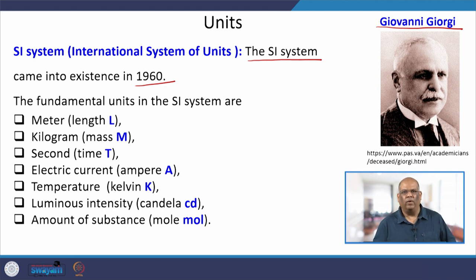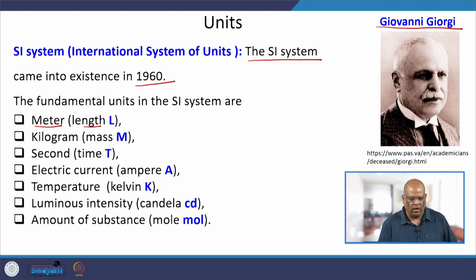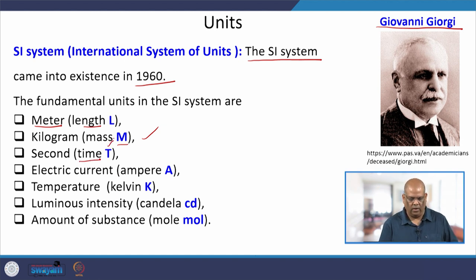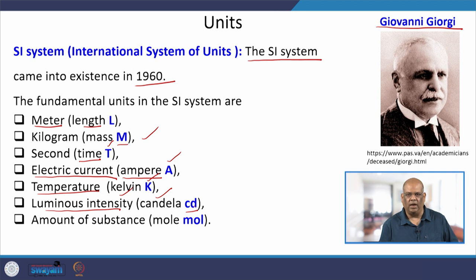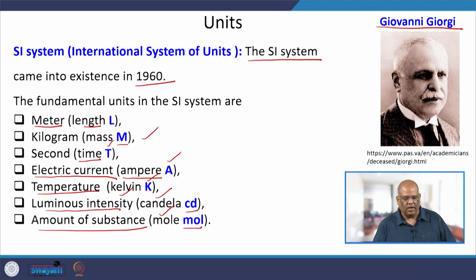The fundamental units in the SI system are: meter (dimension L) for length, kilogram (dimension M) for mass, and second (dimension T) for time. Additionally, there are four more: electric current measured in ampere (dimension A), temperature in Kelvin (dimension K), luminous intensity in candela (dimension CD), and amount of substance in mole (dimension mol). With these seven fundamental units, we form the SI system, which is the most widely used system of measurements.